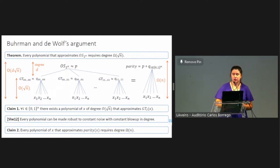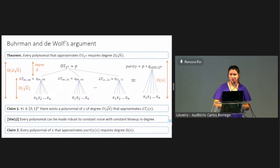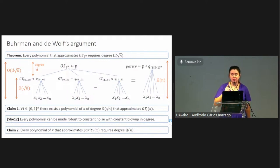The last piece of the puzzle is that any polynomial that approximates parity is required to have full degree omega of n. So d cannot be better than square root of n. Unfortunately, we cannot use the same exact argument to get a better lower bound for ordered search, because the upper bound and lower bound in claims one and two are tight, so we cannot do better.